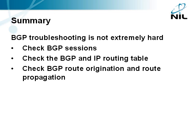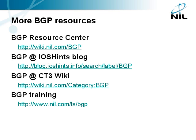Once you are familiar with the basic concepts and troubleshooting steps, BGP troubleshooting is not harder than any other routing protocol troubleshooting. Usually you have to check these major blocks: BGP sessions between the CE routers and the PE routers on both ends, BGP routing table and IP routing table on the client side, and BGP route origination and route propagation on the server side. You also have to remember that most applications require bidirectional connectivity, so these checks have to be performed in both directions. You can find more BGP resources including videos, in-depth technical articles, design guidelines and configuration tips in the BGP Resource Center at wiki.nil.com/bgp. NIL also offers specialized BGP training.